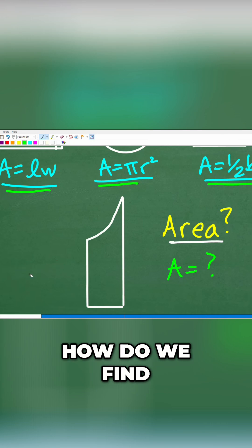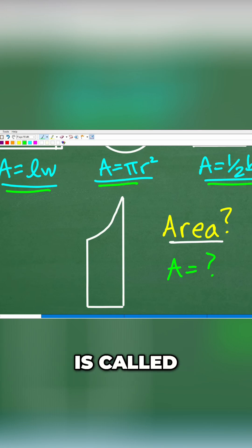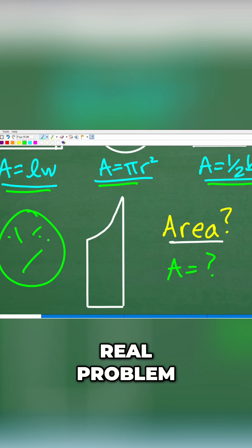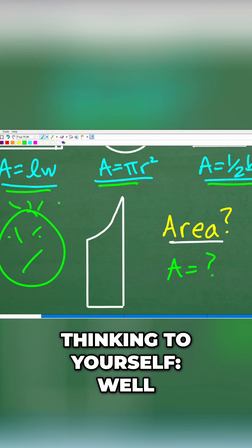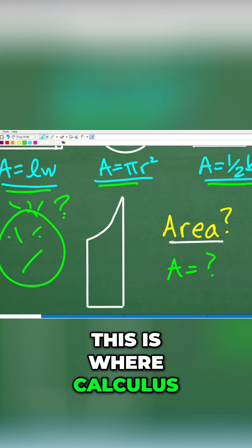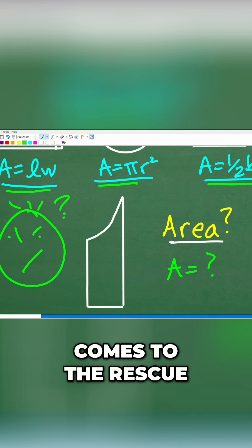So how do we find the area of this particular figure? I don't even know what this figure is called. It might be some sort of wedge. Well, guess what? If there's no formula, we are in a real problem. So you might be thinking to yourself, what do we do here? Well, this is where calculus comes to the rescue.